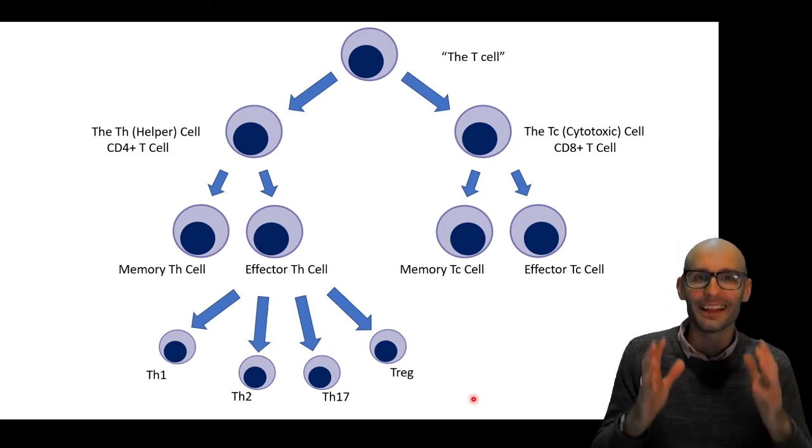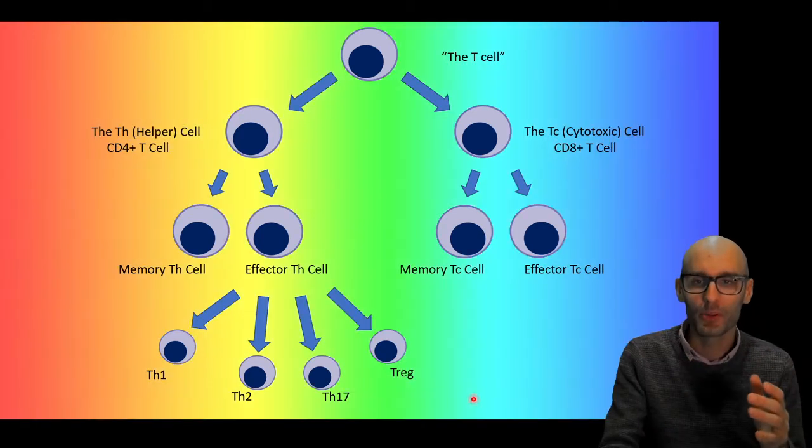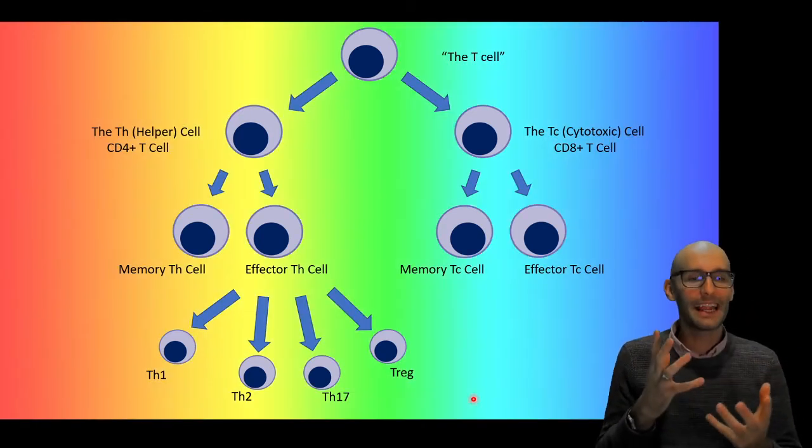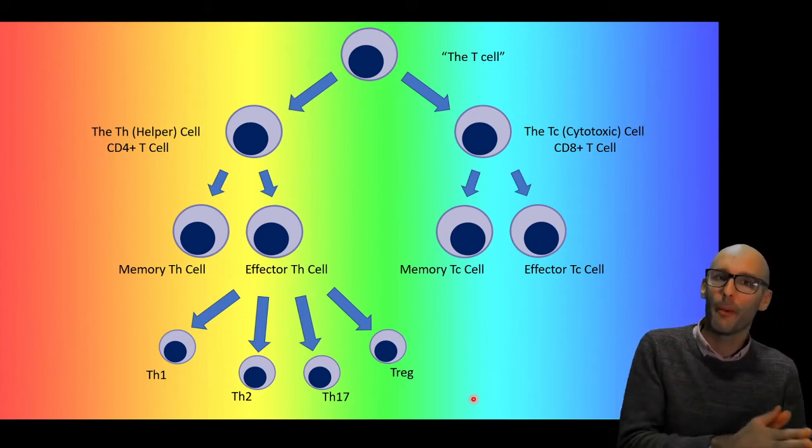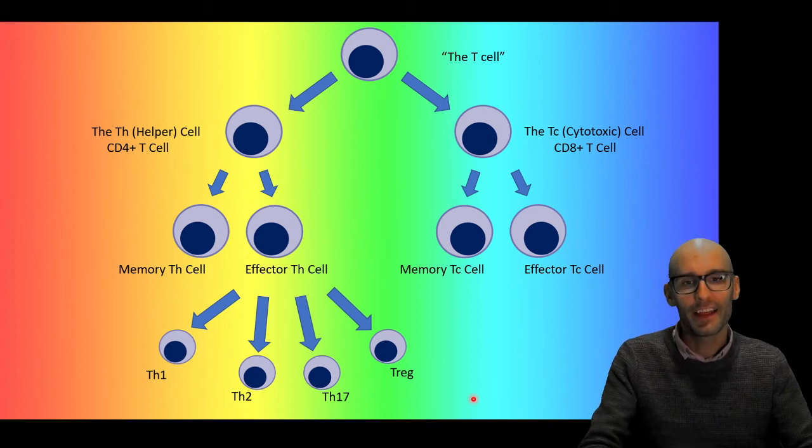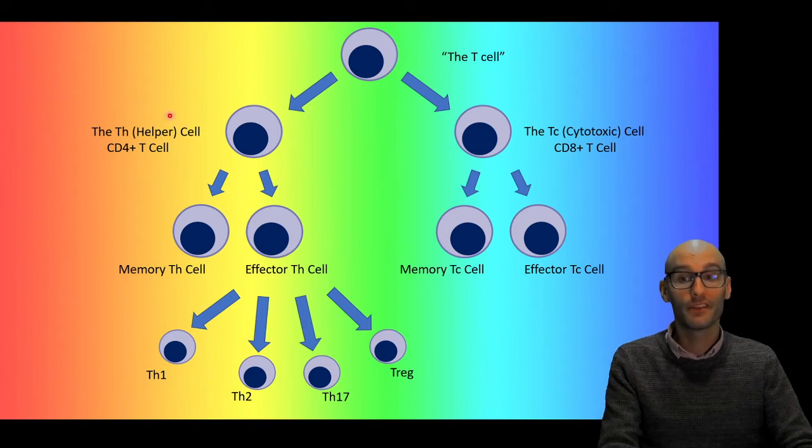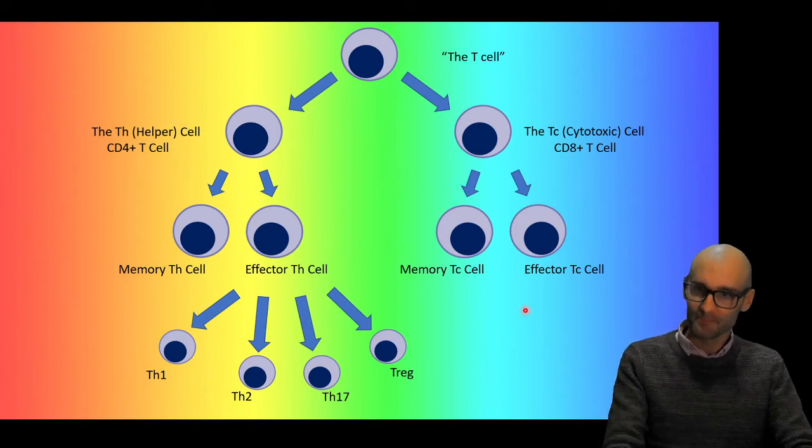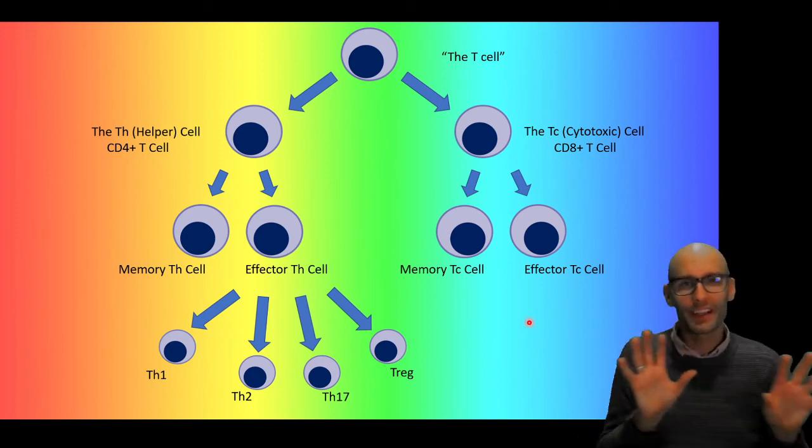And since single cell RNA sequencing has come out, we now start to understand that these subcategories that we've created are a little bit blurry. And what we've actually done is taken something that's probably much more closer to a continuum and kind of randomly broken them up into subgroups. Now there are some subgroups that seem relatively distinct, like the CD8 positive and the CD4 positive cells. But then once you get further down these chains, it seems to be much more of a continuum.